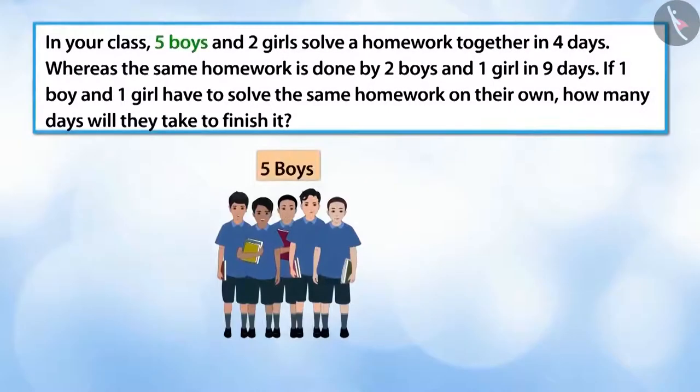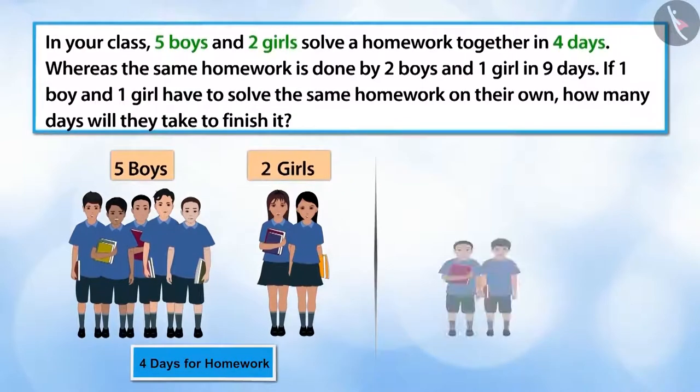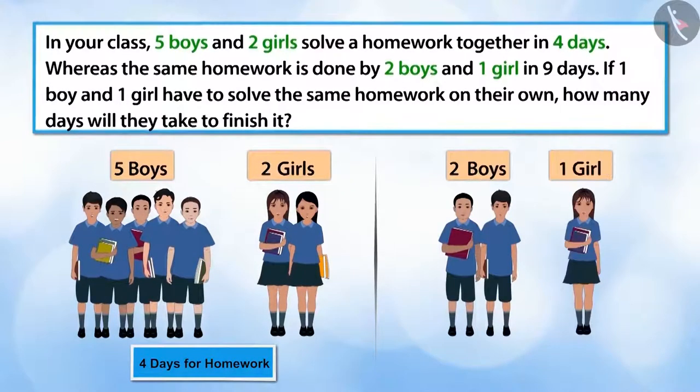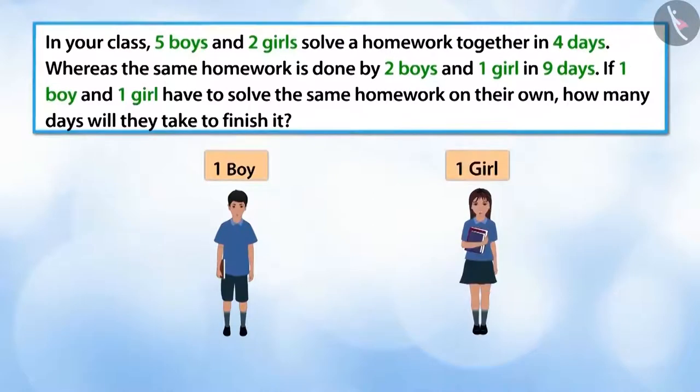In your class, five boys and two girls do their homework together in four days, whereas the same homework is done by two boys and one girl in nine days. If one boy and one girl together have to do the homework on their own, how many days will they take to finish it?